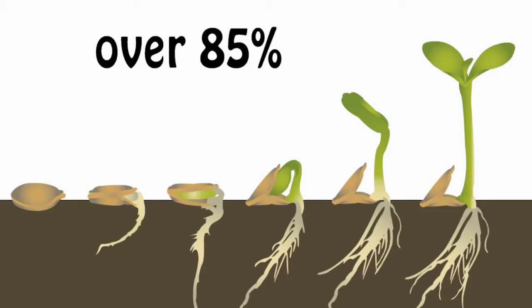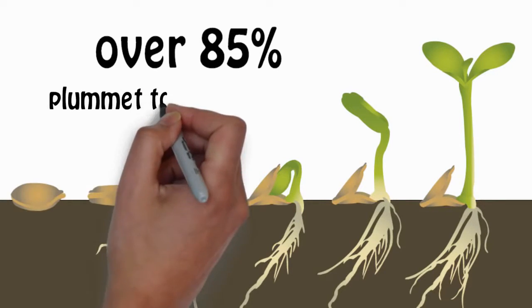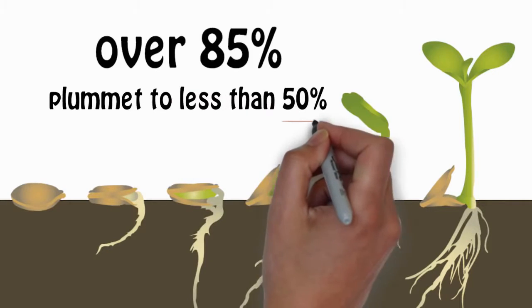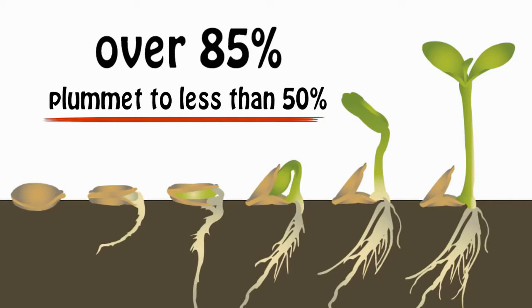If these seeds are improperly stored for an additional year before planting, germination rates can plummet to less than 50%.